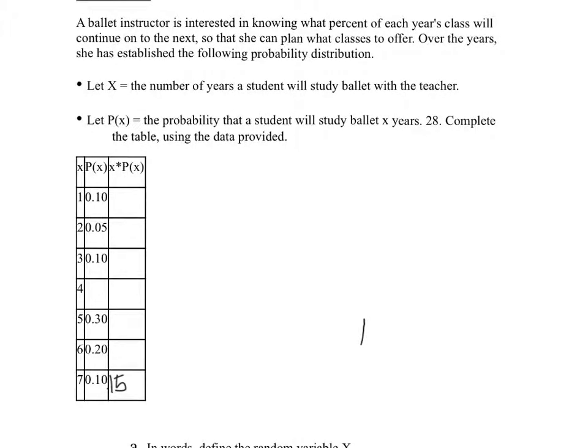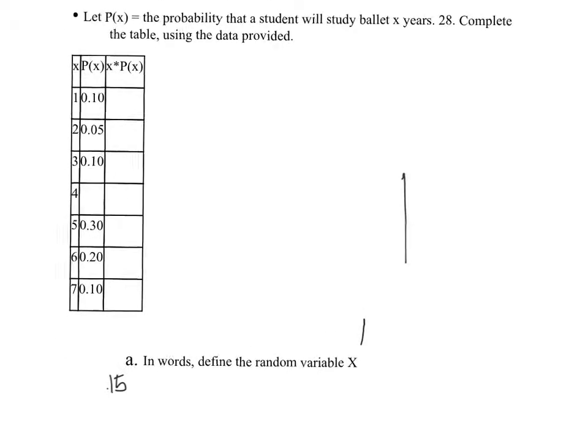The instructor is interested in knowing what percent of each year's class will continue to the next year. So over the years, she established the following probability distribution. Let X be the number of years a student will study ballet with the teacher. So we have X that runs between 0 and 7. You see that 0 is not presented here; the reason is that the probability equals 0 in this case, so it's not really of our interest.